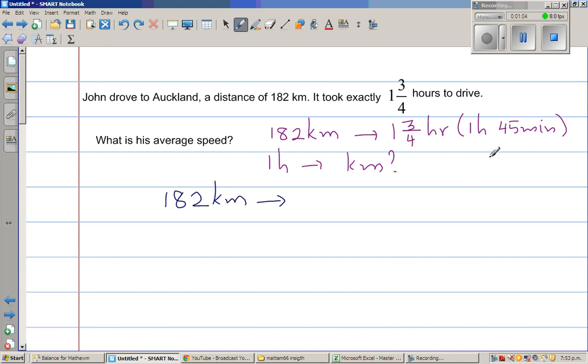When you think about one, one has how many quarters? One has of course four quarters. So one can be written as four out of four. So this is one and three quarter - four quarters and three quarters. So 182 was travelled in seven quarter hours. You want to find in one hour, that means in four quarters, it travelled how many?